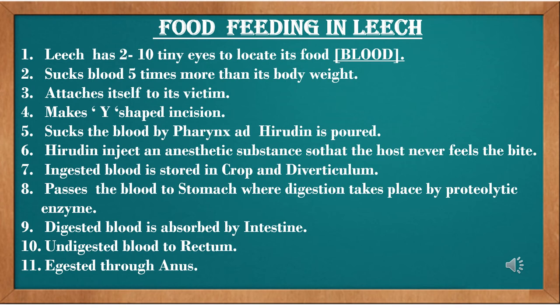In the first step, the leech attaches itself to the victim. Next, it makes a Y-shaped incision — a Y-shaped scar on the skin of the victim — and slowly starts sucking the blood by the pharynx. When blood is sucked, hirudine is poured into that particular place.